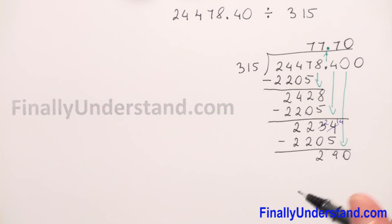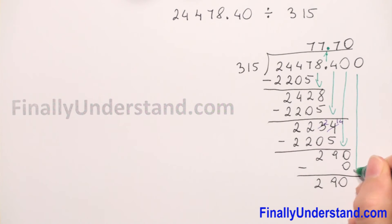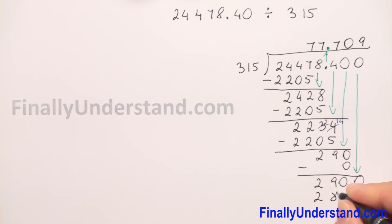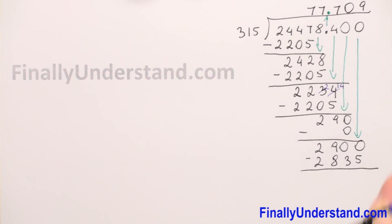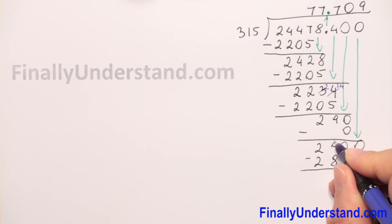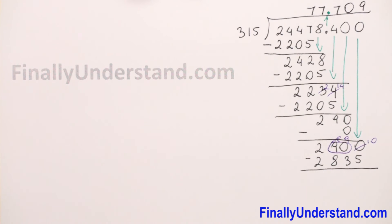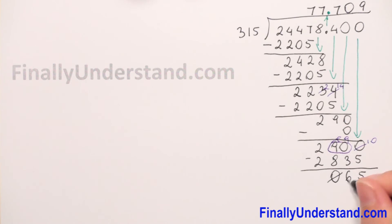Multiplication: 0 times 315 is 0, so subtraction gives us 290. We bring down the next zero to get 2900. 2900 divided by 315 is 9. 9 times 315 is 2835. Subtraction: 10 minus 5 is 5, 9 minus 3 is 6, 8 minus 8 is 0. Our remainder is 65.